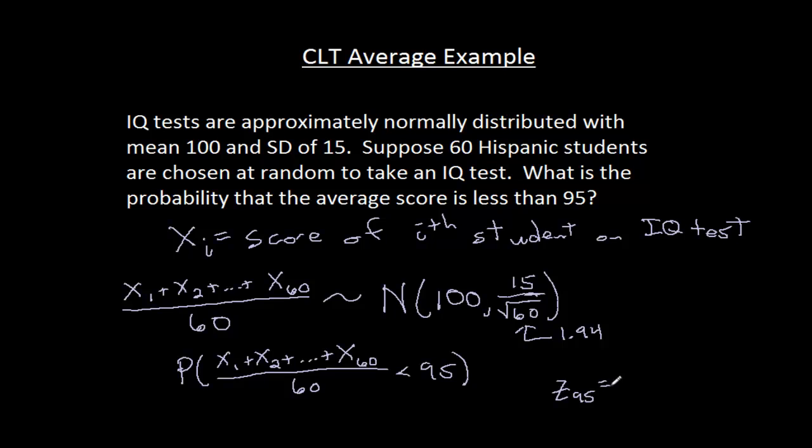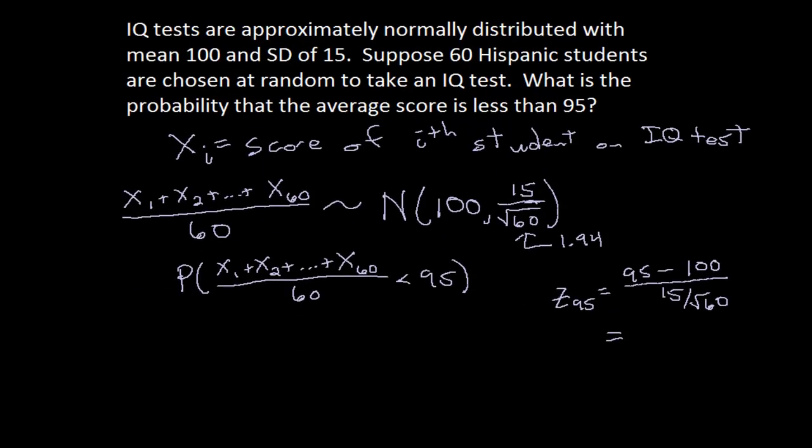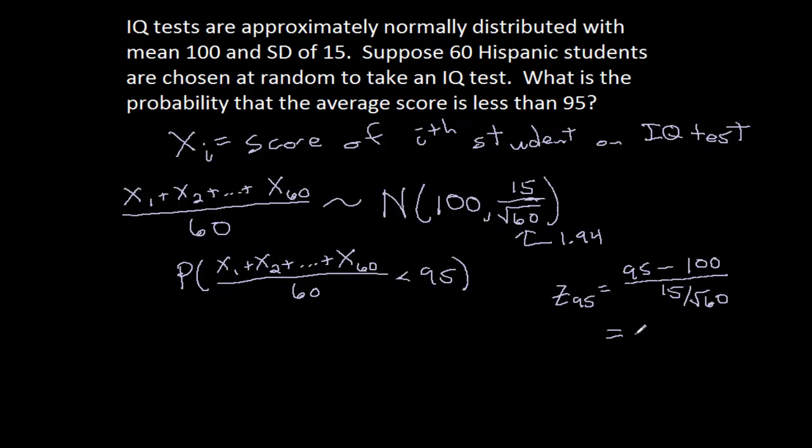And we get z_95 is 95 minus the mean divided by the standard deviation. And this gives us, I'm going to scroll down a little bit here, this ends up giving negative 2.58.